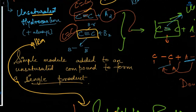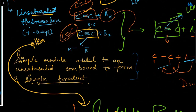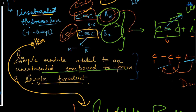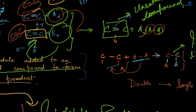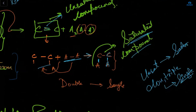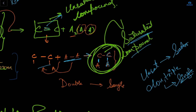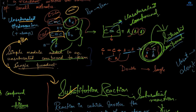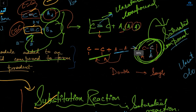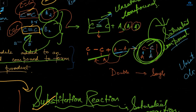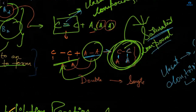So this is your addition reaction. A simple molecule is added to an unsaturated compound to form a single product. Here A2 or B2 is your simple molecule, which is added to your unsaturated compound — the double or triple bond — to form a single product, which is your saturated compound.